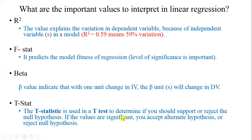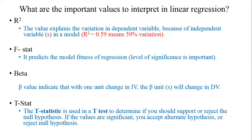The T-statistics are used to determine if you should support or reject your null hypothesis. Please be sure you have the idea of alternate and null hypothesis. If the T-value is significant you accept your alternate hypothesis. When people say reject your hypothesis they are talking about rejecting the null hypothesis. So make sure you understand what null and alternate hypothesis mean.